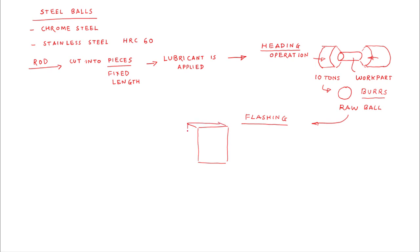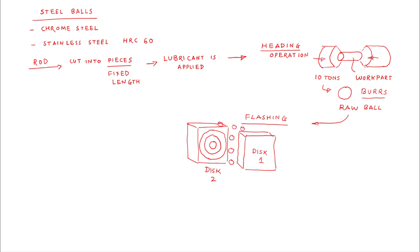The raw balls are further processed by the flashing operation, which uses two hardened metal disks with circular grooves. One disk is fixed and the other moves relative to it. During this relative motion, the raw balls are taken between the two disks so that burrs and unwanted portions are removed. Flashing is repeated until the required surface finish on the raw balls is achieved.